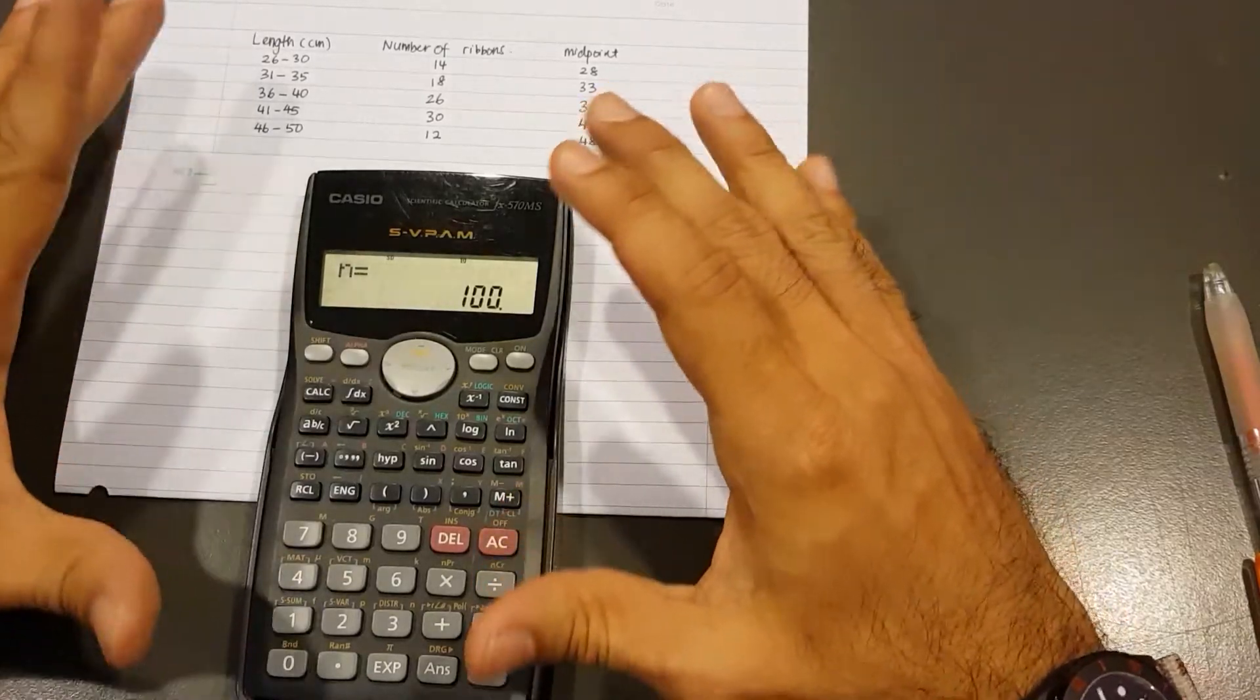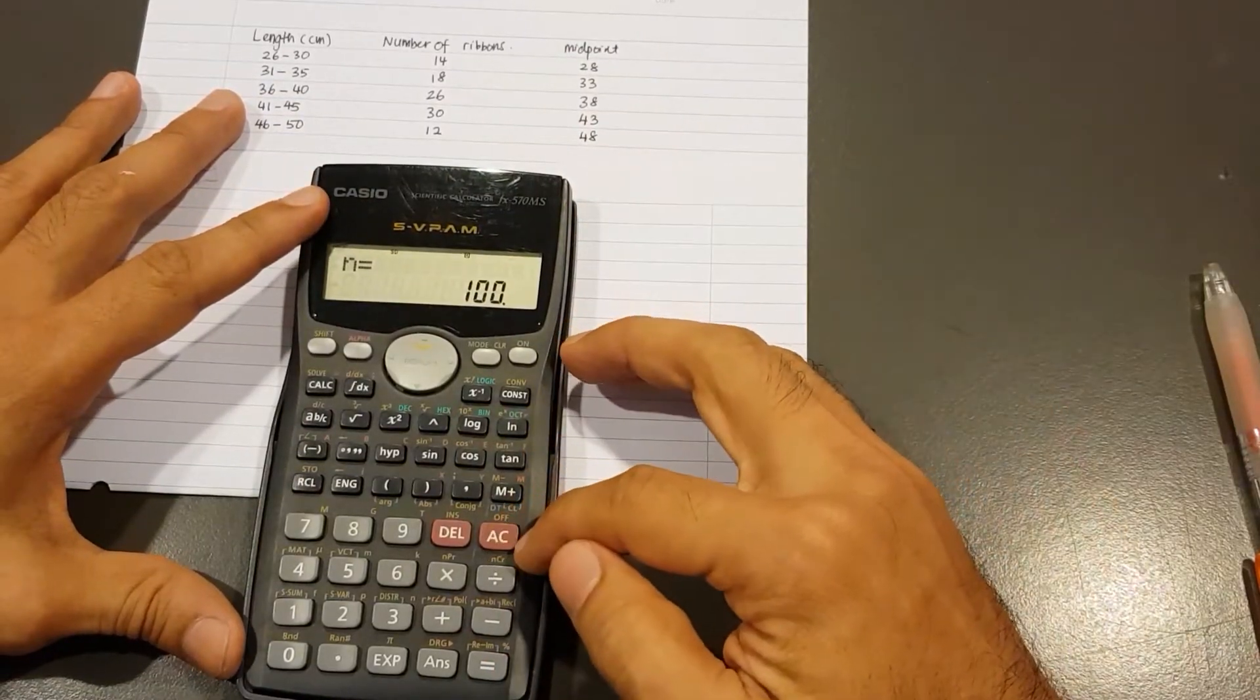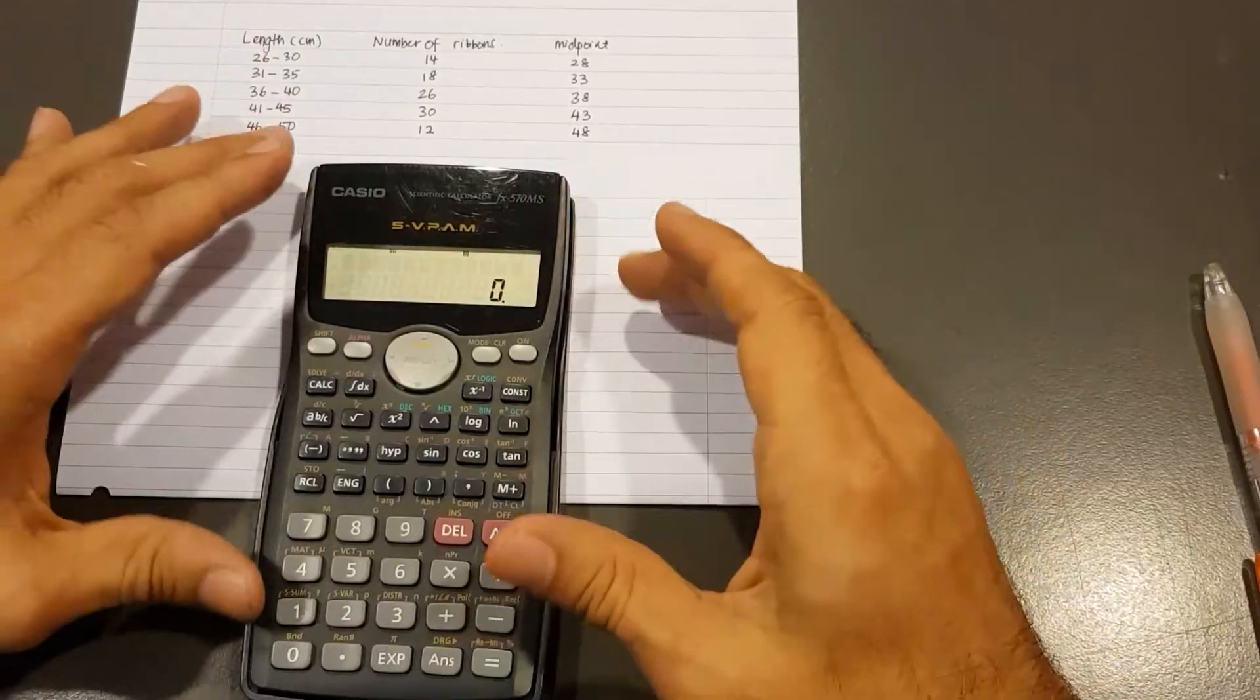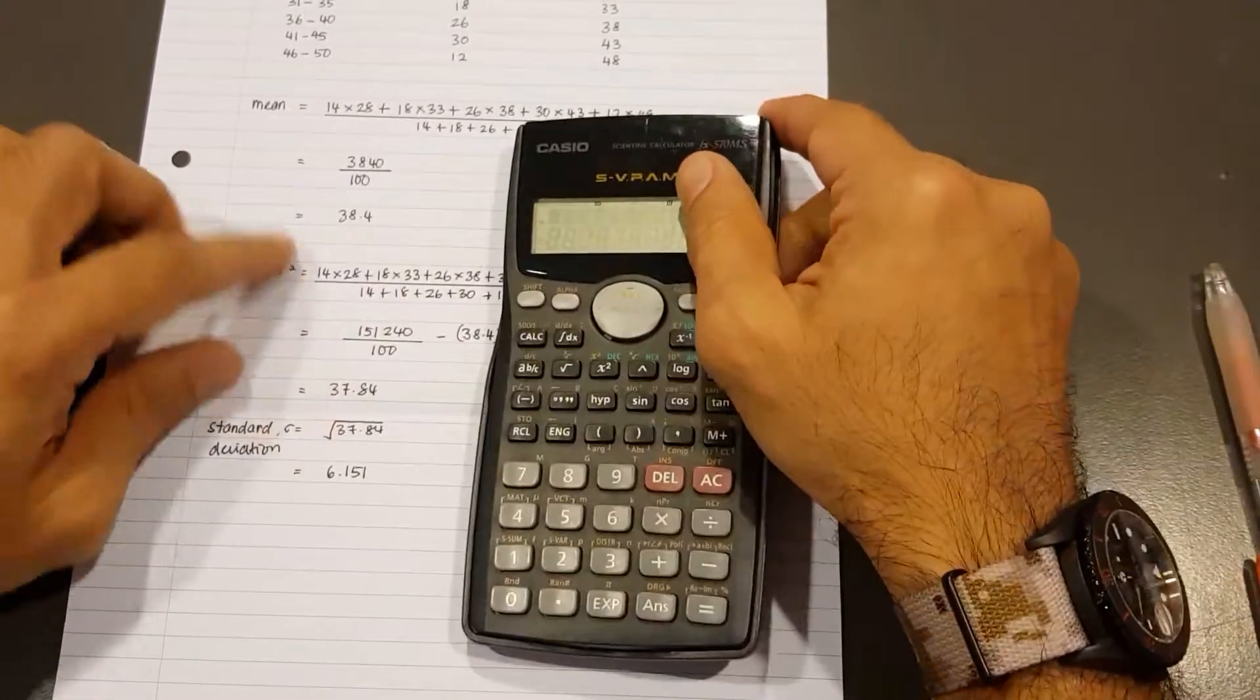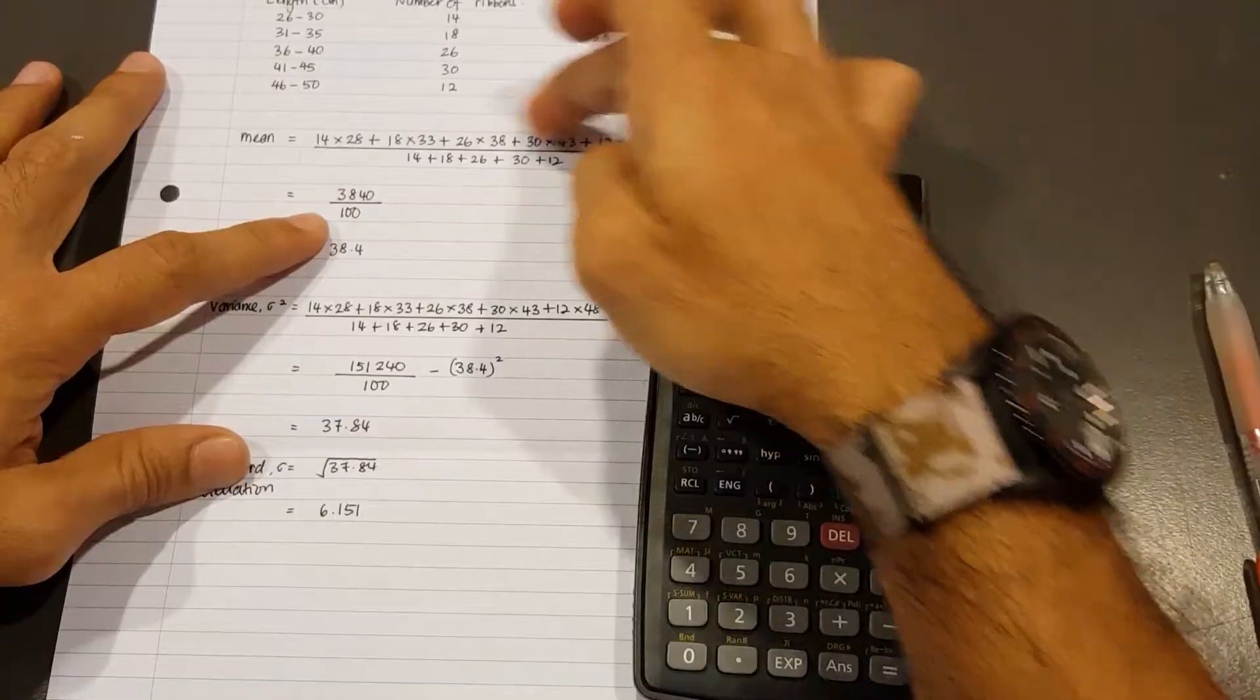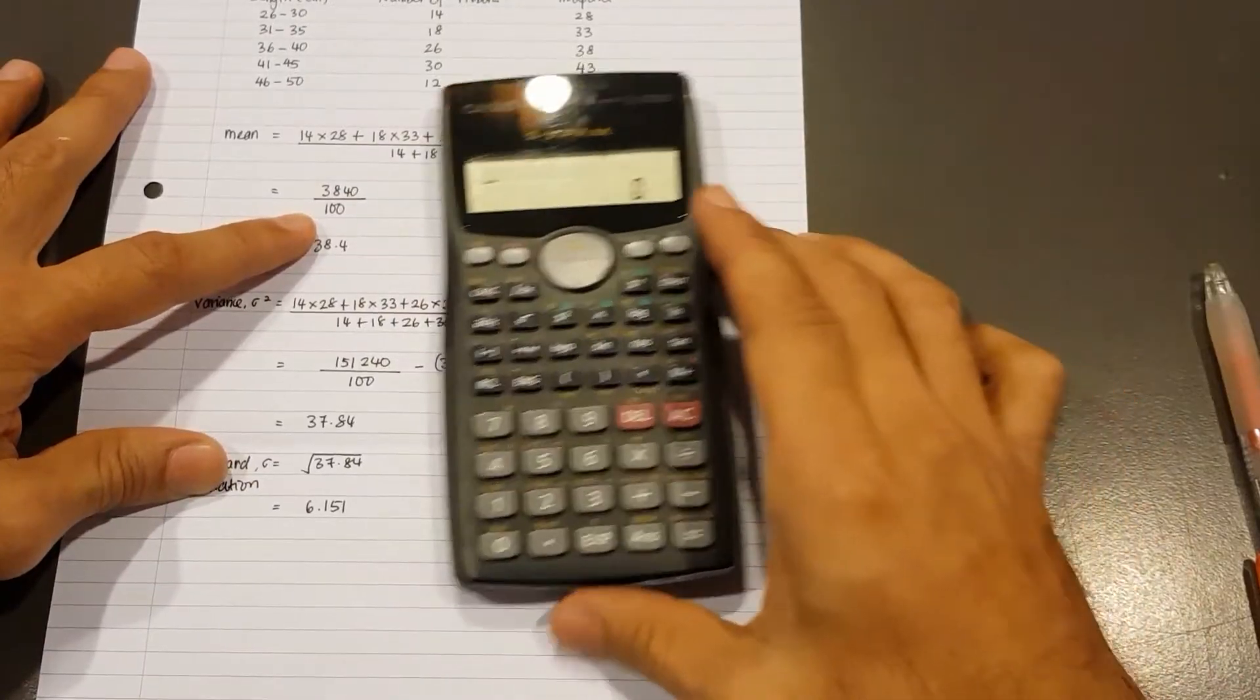Now, how do I use the calculator? Well, once we've already keyed the data and stored everything into this calculator, we can go ahead and just hit the AC button that clears the screen. But don't worry, the memory is still stored in the calculator. So now, remember the working where I prepared to find the values for the mean. Well, the sum of the numerator here is supposed to be 3840. The total is 100.